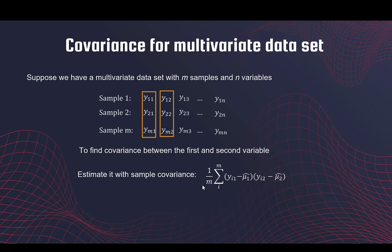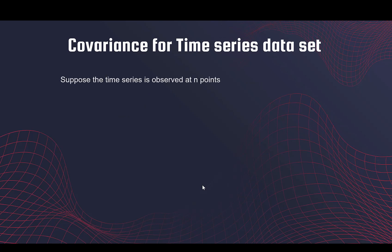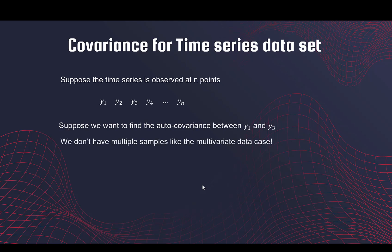For our time series data set, suppose we have a time series that's observed at n points. Say we want to find the autocovariance between y1 and y3. How do we do that? We don't have multiple samples like we did for the multivariate data case.